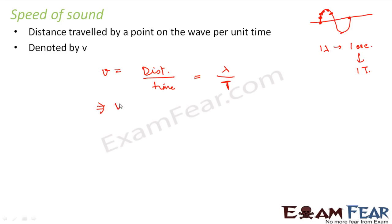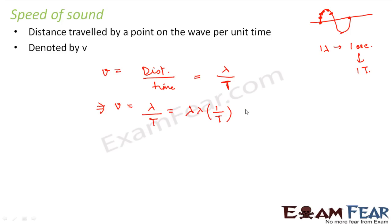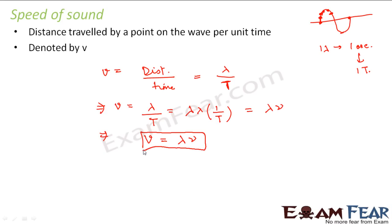One wavelength is one oscillation, and the time taken to cover one oscillation is the time period. So the time taken to complete one wavelength is the time period. From this we can say that V equals λ divided by T. Since 1/T equals frequency, the speed of sound equals λ (wavelength) multiplied by ν (frequency).